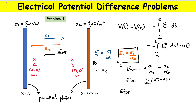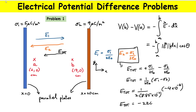I'll go ahead and calculate that total electric field numerically. With two times epsilon zero — where epsilon zero is 8.85 times 10 to the minus 12 — and the charge densities, taking the difference 5 minus 9 gives minus 4 microcoulombs per meter squared, which is times 10 to the minus 6 coulombs per meter. Putting that in the calculator, the negative sign tells me the direction, and I get minus 226,000 volts per meter as the magnitude of the total field.